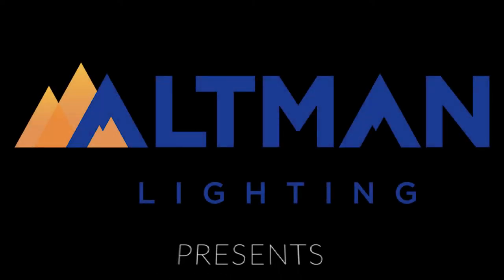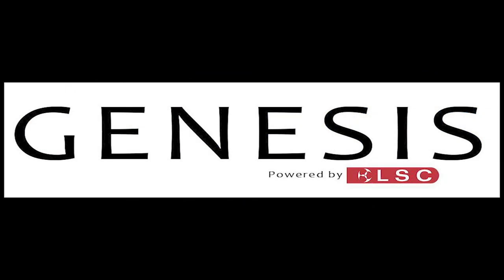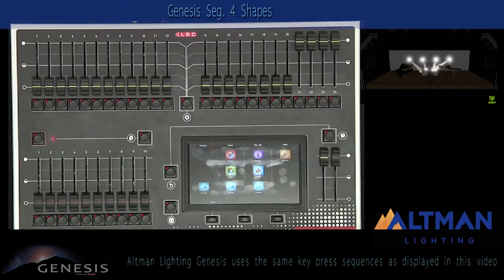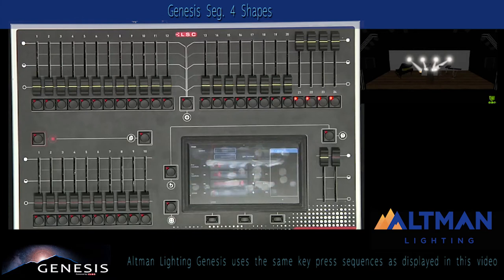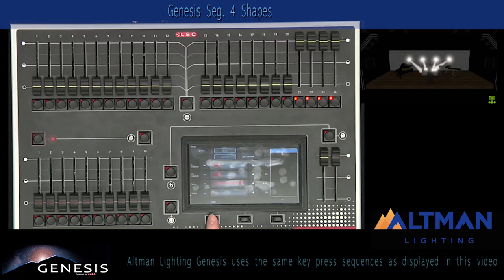Altman Lighting presents Genesis. Shapes allow you to do specific effects such as circles and ballyhoos. Press the shapes app button, make sure your fixtures are selected, and press Create. In this case we've done an ellipse effect, so it's doing a circle.